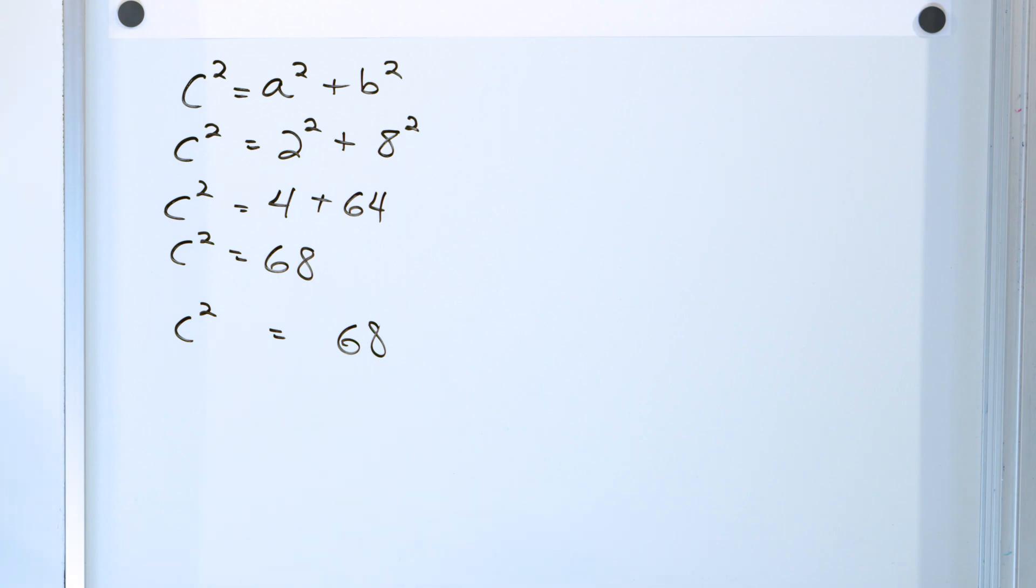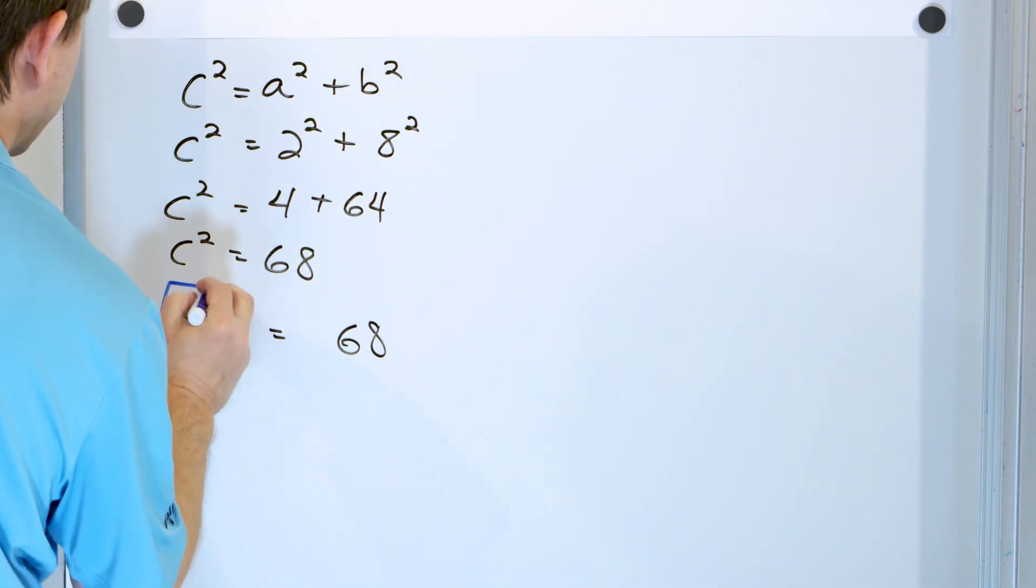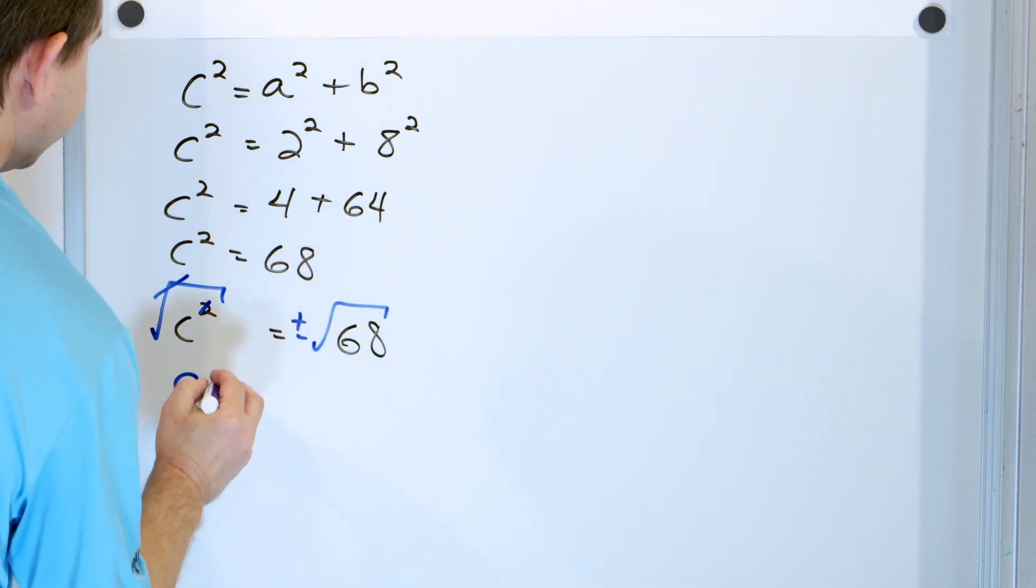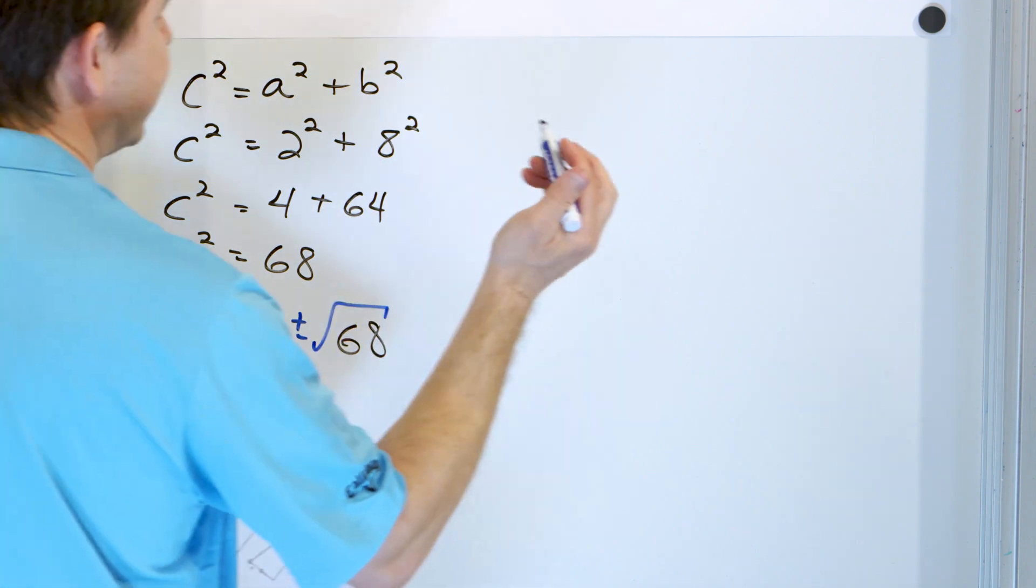Now we want to solve for C, the distance C here. So we're going to take the square root of both sides, cancel these guys. We have to add our plus or minus, and the distance C is going to be the square root of 68. I don't know what that is.